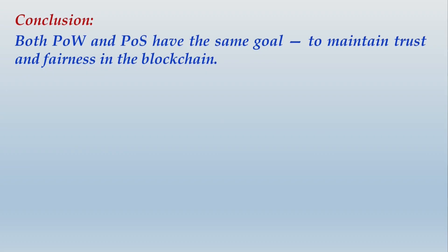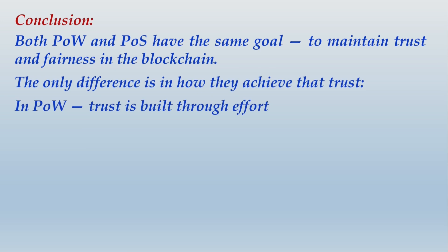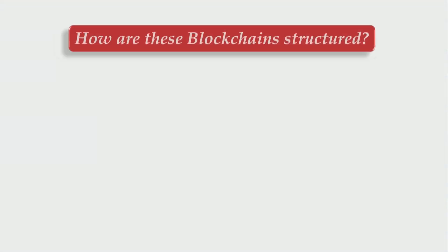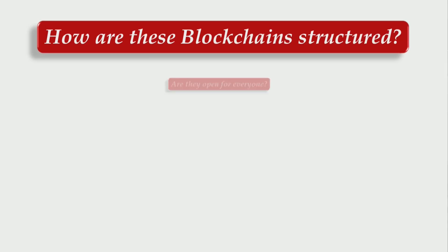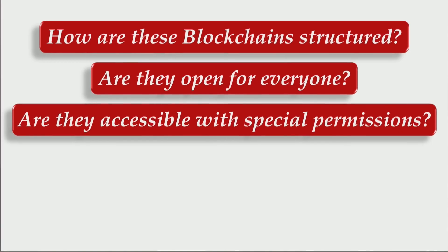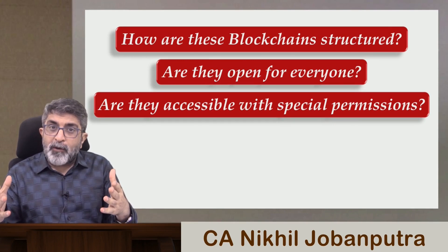We have understood the roles of miners and validators, and understood POW and POS. We can conclude: both POW and POS have the same goal — to maintain trust and fairness in the blockchain. The only difference is how they achieve that trust: in POW, trust is built through effort; in POS, trust is built through commitment. Now we answer a very important question: how are these blockchains structured? Are they open for everyone or accessible only with special permissions? This leads us to different categories of DLT networks.